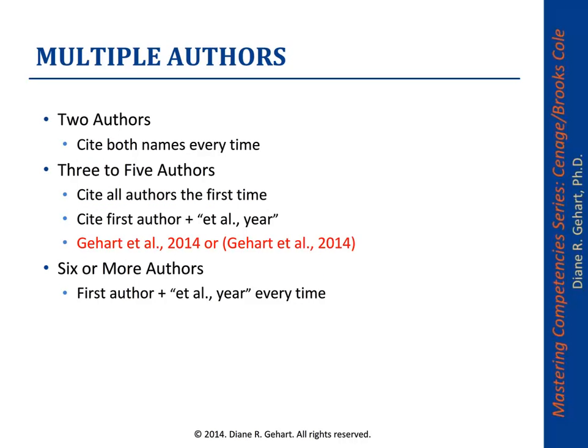When citing multiple authors, with two authors it's easy — you cite both authors' names every single time. When it's three to five authors, the first time you cite the reference you list all of the last names only, no initials. After that, you use just the first author and et al. The format is: first author's last name, no comma, then et al., then period, then comma, then a space, then the year. For six or more authors, you just do the first author and et al. every single time. Remember, no initials or first names go into in-text citations. There's always the good joke that et al. is the most published author in the history of psychology.